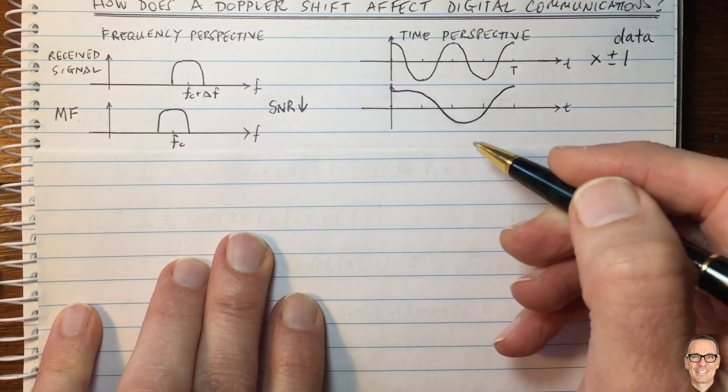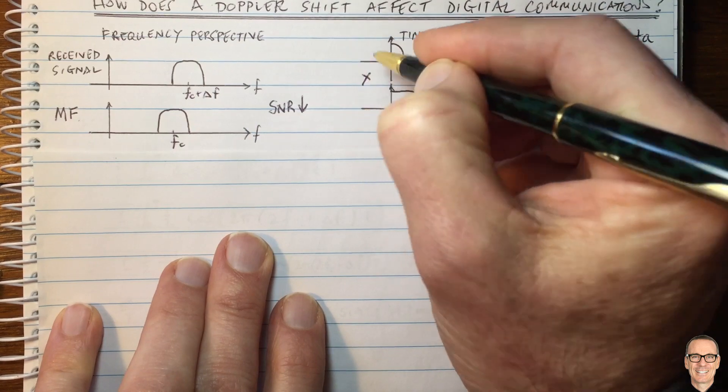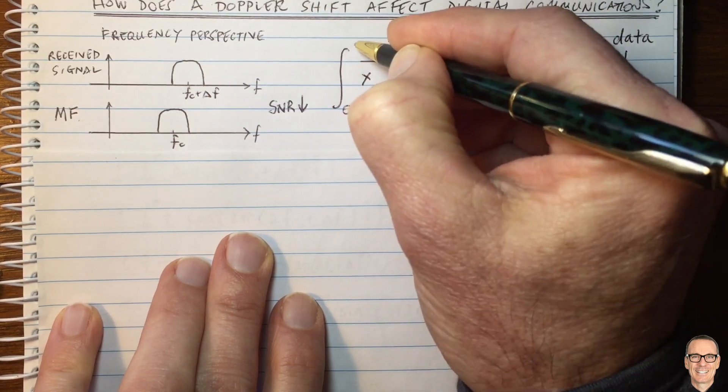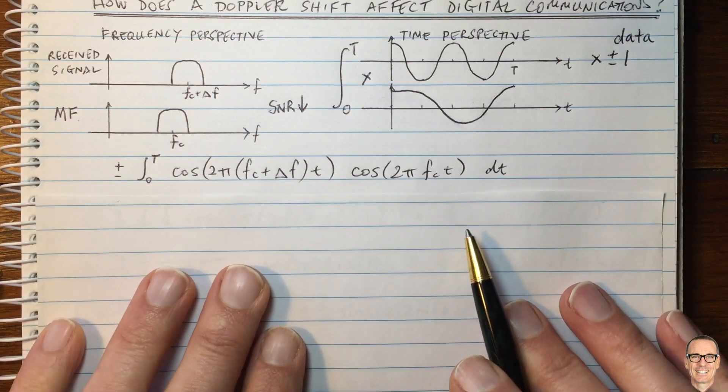Now, in the matched filter, what happens is you multiply these two signals together, and then you integrate over the time period of capital T. So what does that give us in mathematics?